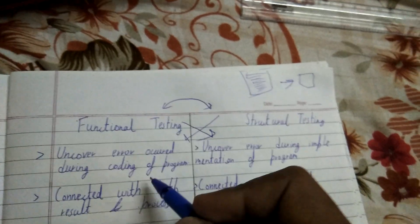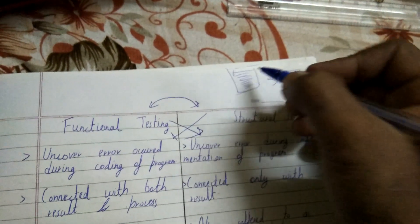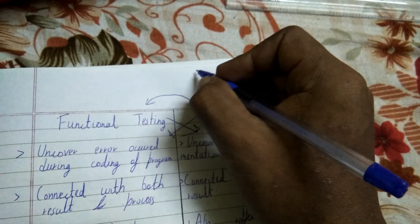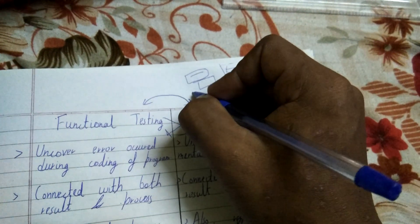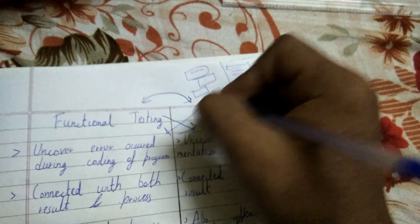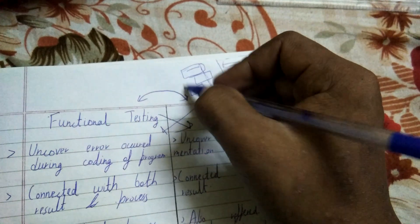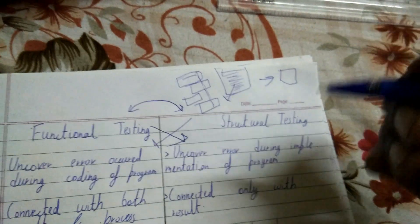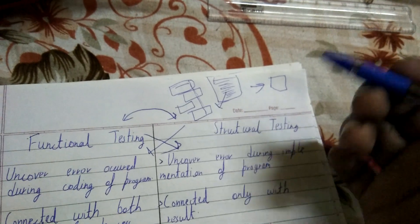The second difference is that structural testing is connected with both result and process — like how the structure is maintained, whether loops come first, then input, then output. So the process and what result each component provides are both considered. But in the case of functional testing, it is only concerned with whether it is providing the result we want or not.